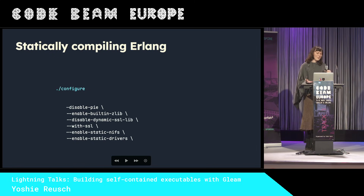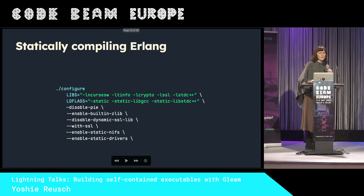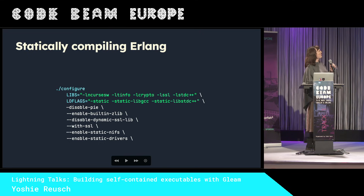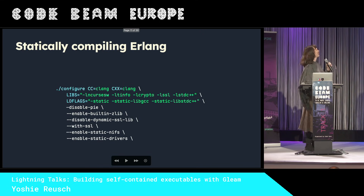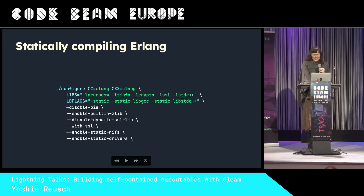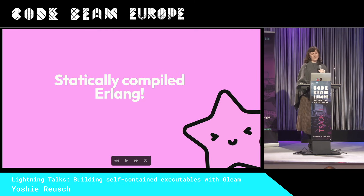It turns out that if you figure out which options to pass, you also need to tell the linker to do some extra stuff. This also doesn't work, so you bang your head against your desk for like two weeks. And then you figure out you just switch to Clang and everything works. You can make statically compiled Erlang binaries.